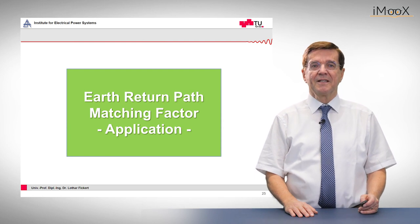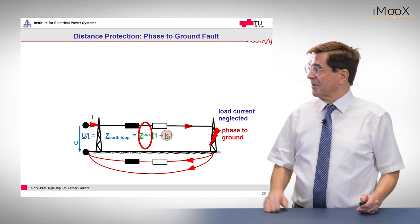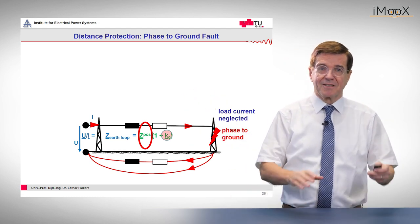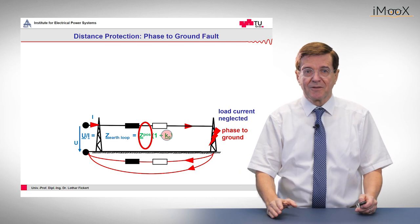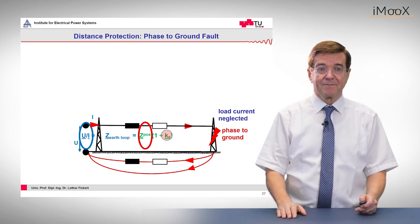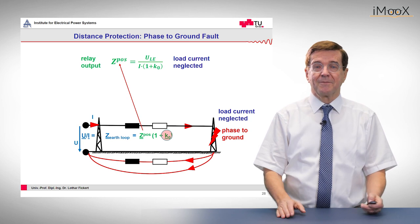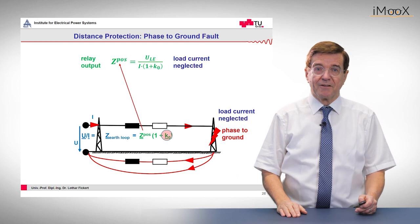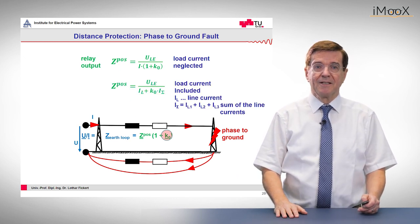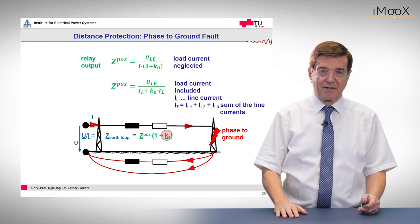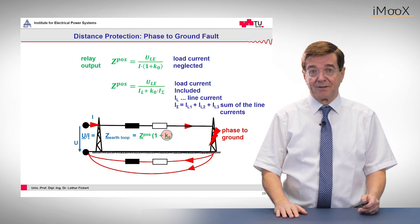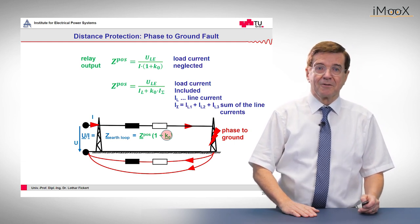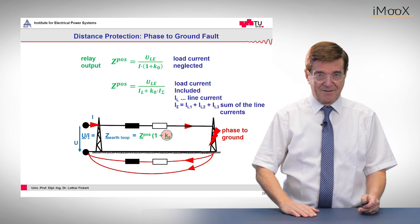The application is: we want the positive sequence impedance, which is the line impedance from the relay to the fault, but we measure the loop impedance. The loop impedance can then be calculated back by applying this formula when we neglect the load current. If we take substantial load current into account, the formula is slightly modified — we include the line current and, multiplied by this earth return path matching factor, multiplied by the sum of the line currents.